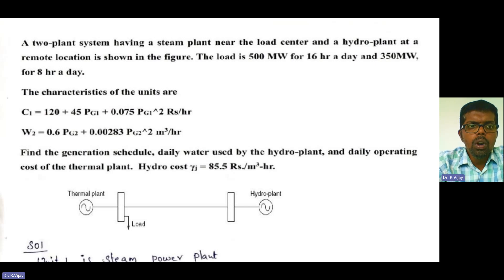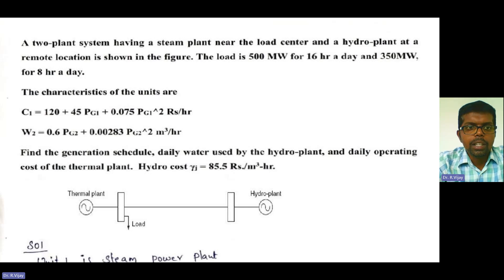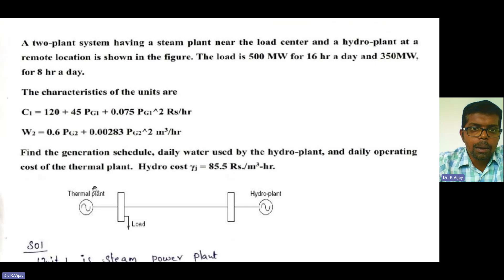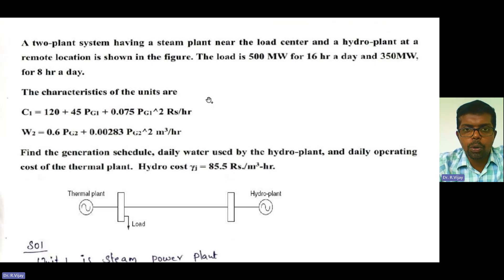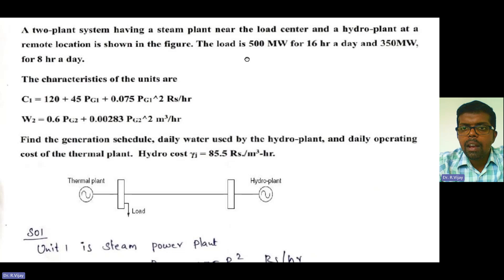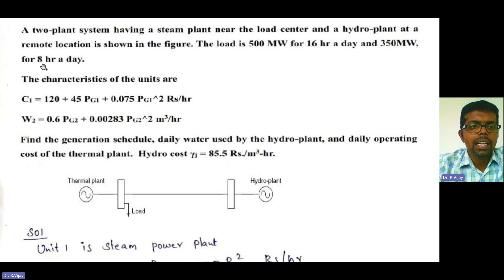A two-plant system having a steam plant near the load center and a hydro plant at the remote location, as shown in the figure. The first is the thermal power plant (steam power plant) near the load center, and the hydro power plant is at the remote location. The load is 500 megawatt for 16 hours a day and 350 megawatt for 8 hours a day.